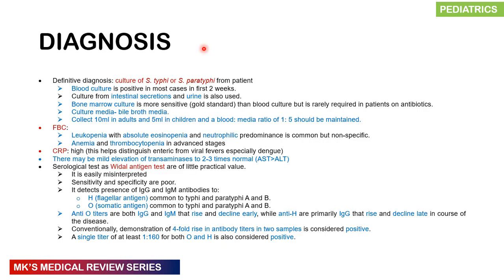The definitive diagnosis is culturing Salmonella typhi or paratyphi from the patient. Blood cultures are positive in most cases in the first two weeks. Bone marrow cultures are the gold standard and much more sensitive, but difficult to obtain, so we usually go with blood cultures. The mnemonic BUS: Blood or bone marrow cultures in the first week, Urine cultures in the second week, and Stool cultures in the third week. Culture media is bile-broth media — collect 10 mls in adults, 5 mls in children, maintaining a blood-to-media ratio of 1:5.